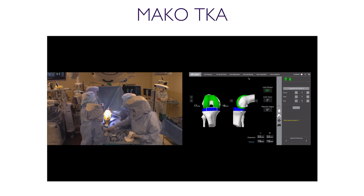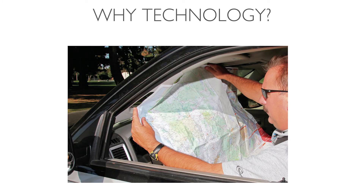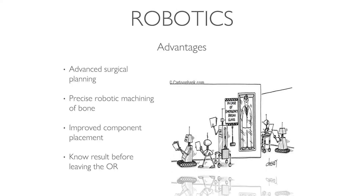Why technology? We don't use paper maps to navigate anymore — almost all cars now have navigation, and phones have it too. This is a technological innovation that makes our lives safer, simpler, and easier to navigate. Similarly, robotics has many advantages: it allows us to do advanced surgical pre-planning, machine bone very precisely, improve placement of components in the human body, and in a sense know what the result is going to be before we leave the operating room.